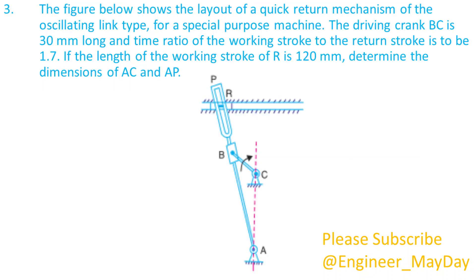Here is the final question. The figure below shows the layout of a quick return mechanism of the oscillating link type, for a special purpose machine. The driving crank BC is 30 millimeters long and time ratio of the working stroke to the return stroke. If the length of the working stroke of R is 120 millimeters, determine the dimensions of AC and AP.